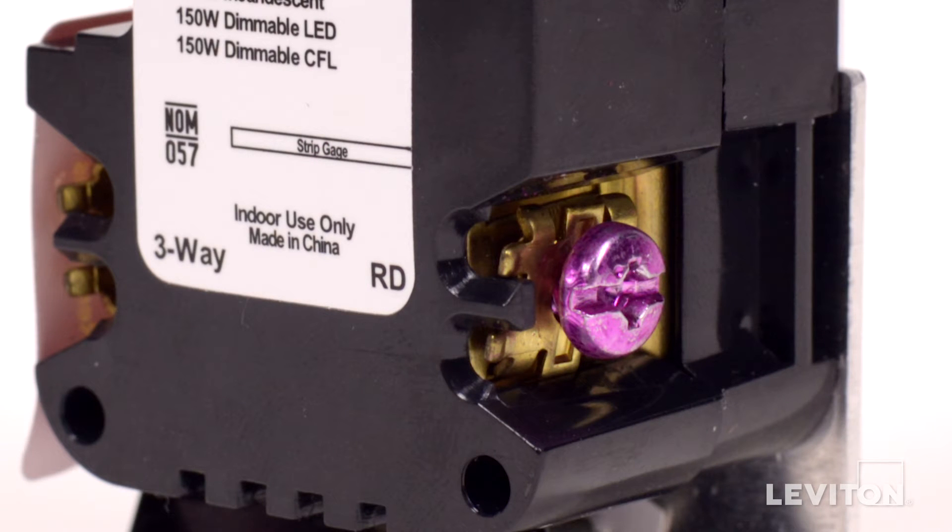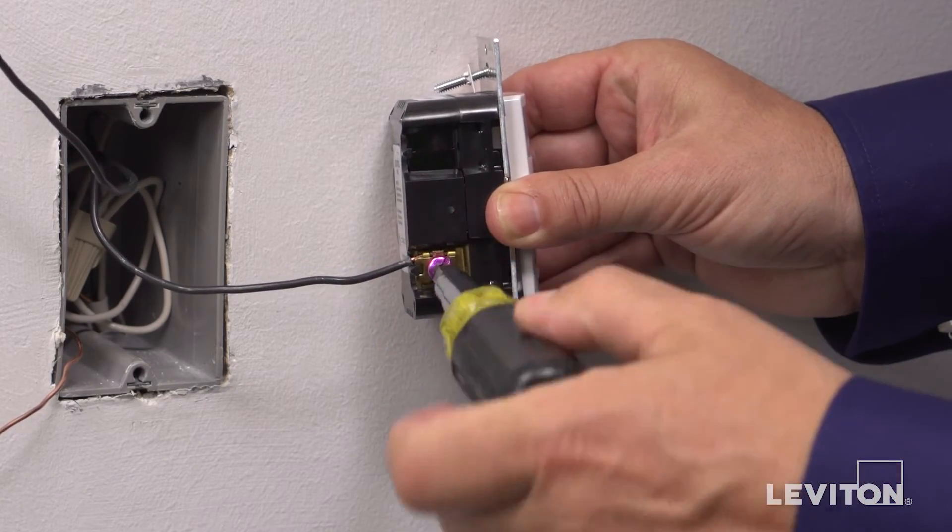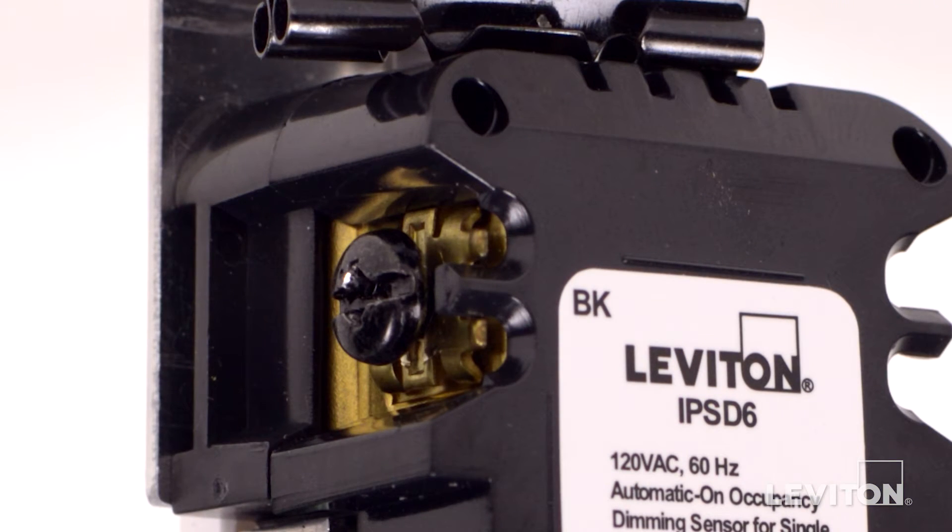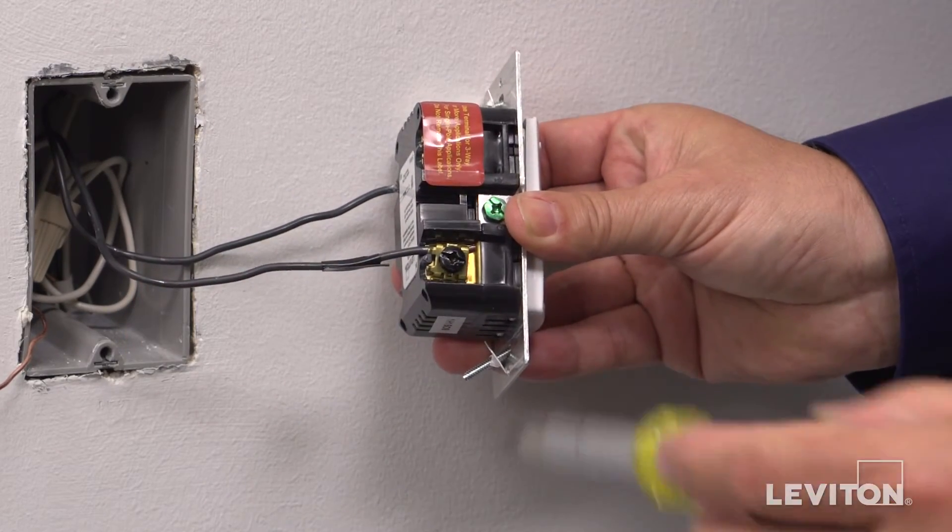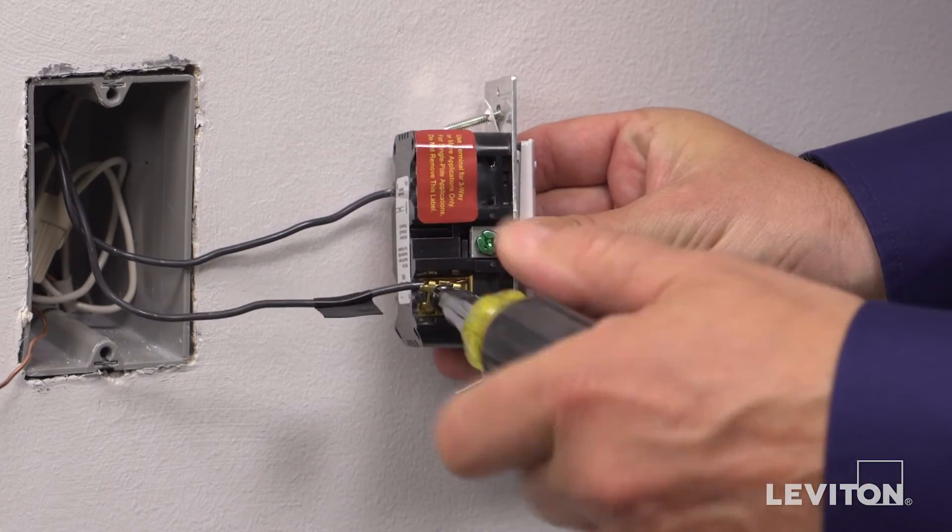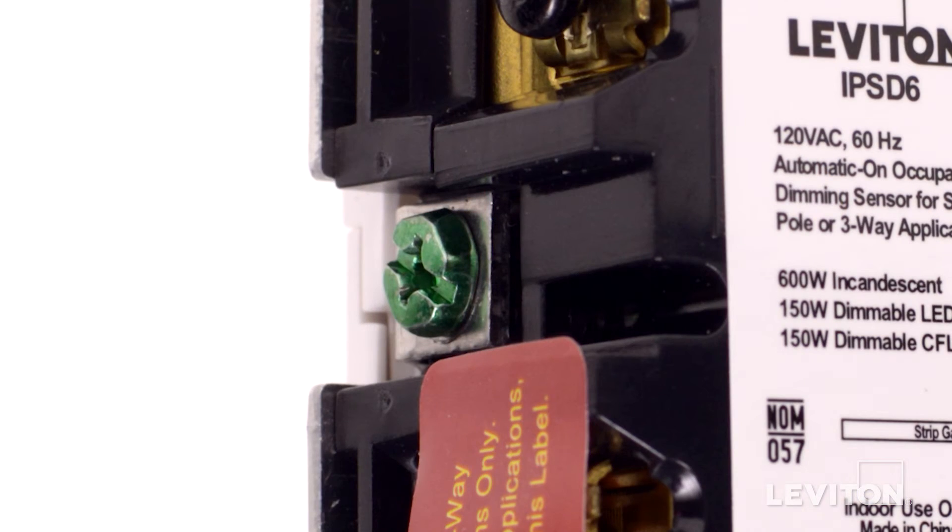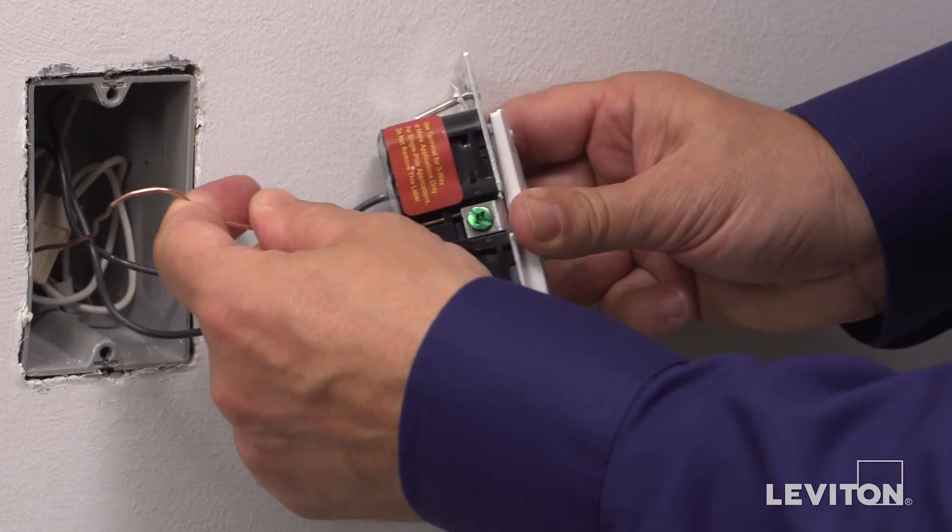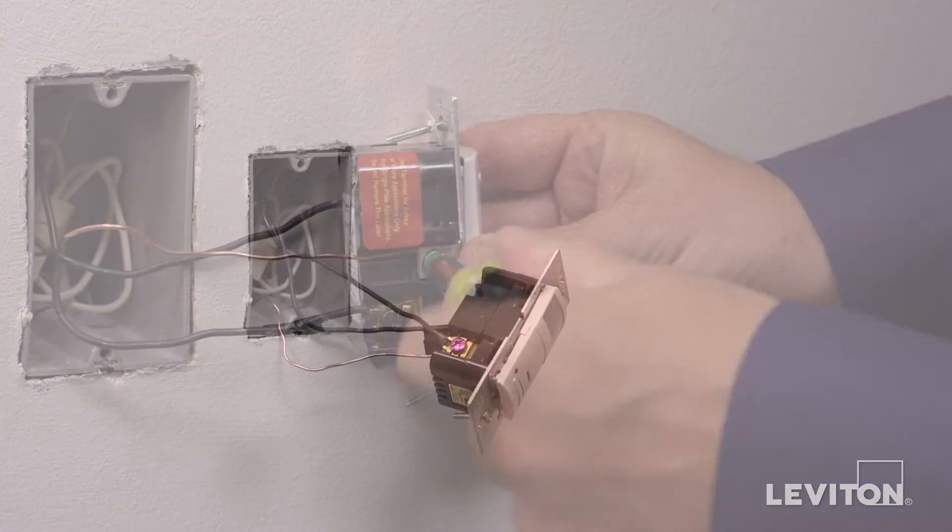Connect the load wall box wire to terminal screw marked RD. Connect the line hot wall box wire to the terminal screw marked BK. Connect the green or bare copper wire in the wall box to the green terminal screw. The device is now terminated.